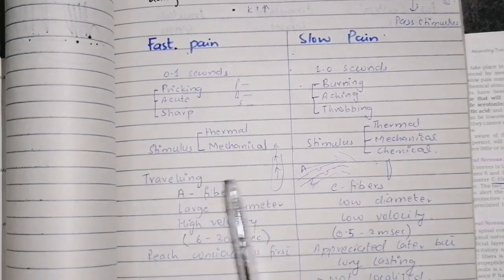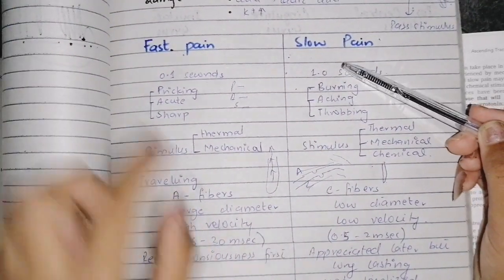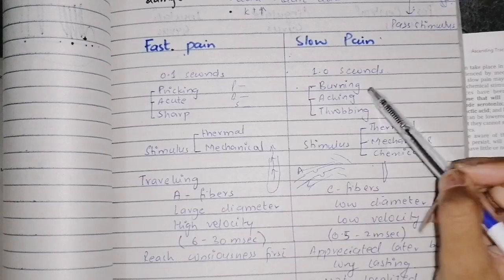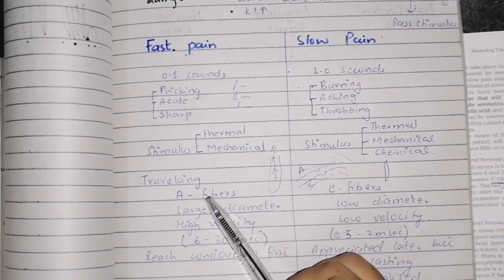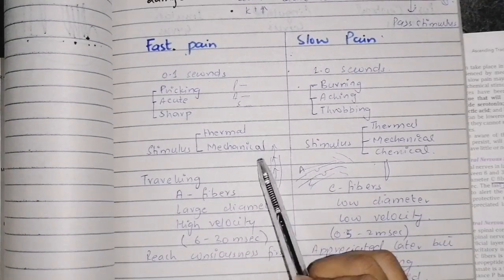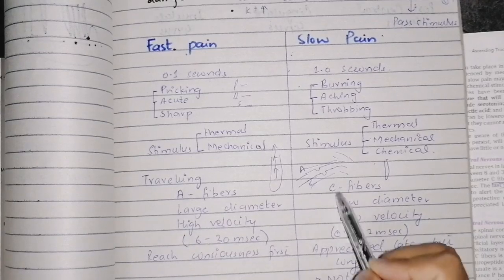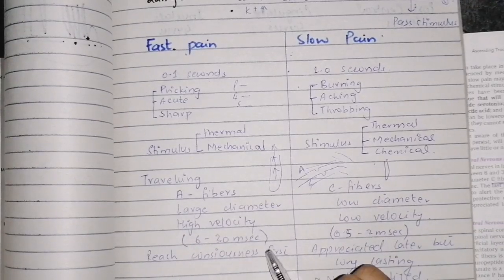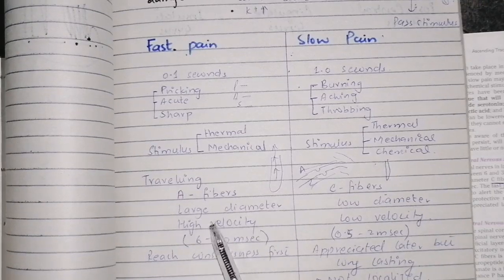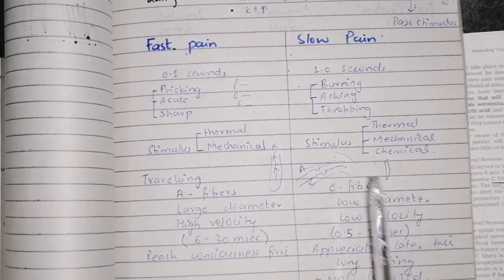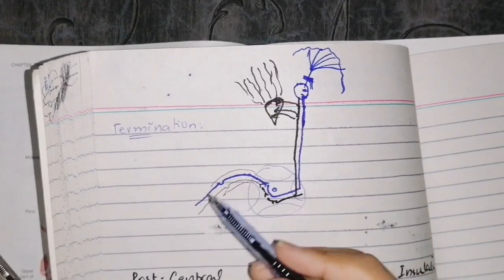To summarize the differences: fast pain — pricking, acute, or sharp — occurs quickly after the stimulus. Slow pain — burning, aching, or throbbing — occurs later but lasts longer. A-delta fibers have a larger diameter and higher velocity; C fibers have a smaller diameter and lower velocity. Fast pain reaches consciousness quickly and is localized; slow pain reaches consciousness later, is long-lasting, and is not localized.